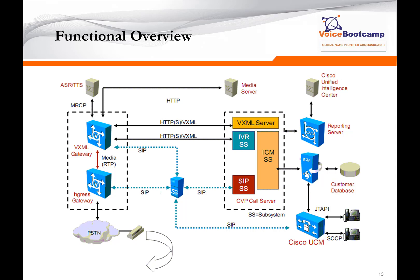The CVP server itself has multiple subsystems running. You have the call server that runs SIP service, ICM service, and IVR service — all part of the call server. The same physical box can also have a VXML server. Whenever CVP needs to communicate with ICM, it uses the ICM service. If CVP needs to communicate with the SIP proxy server or call manager, it uses the SIP service. If it requires VXML gateway functionality using HTTP, it uses the IVR system service. And if the IOS gateway needs to contact the VXML server, it communicates with the VXML service within that server.